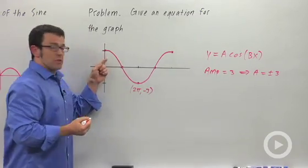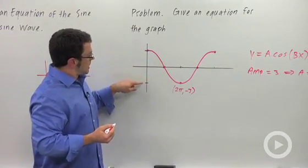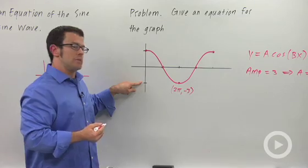And I'm going to say that it's plus 3 because cosine normally starts from its maximum. If it started from its minimum I would say that a was negative 3.